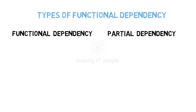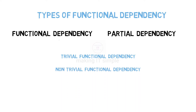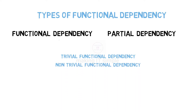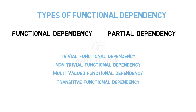The types we will cover are: First, Trivial Functional Dependency. Second, Non-Trivial Functional Dependency. Third, Multi-Valued Functional Dependency. Fourth, Transitive Functional Dependency. And the last one is Fully Functional Dependency.